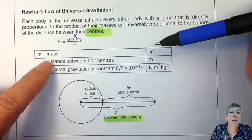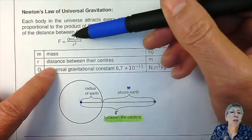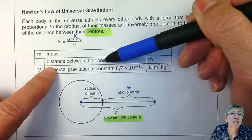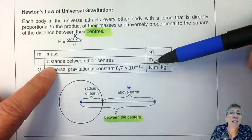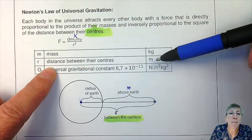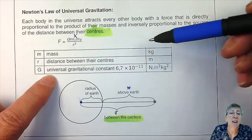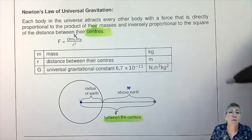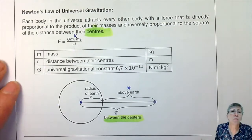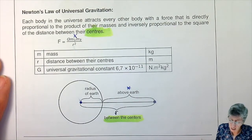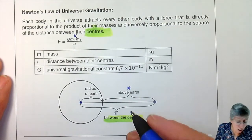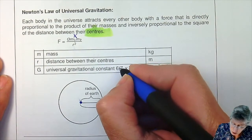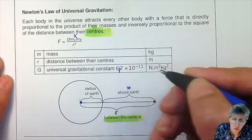Remember: mass must be in kilograms, the distance must be between the centers and must be in meters, and then you've got that constant G from the information sheet — 6.67 times 10 to the minus 11.